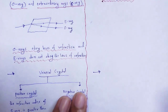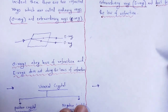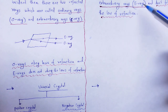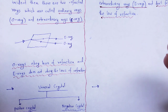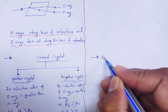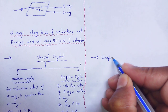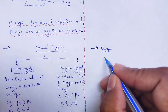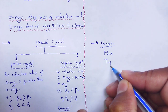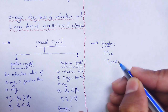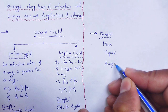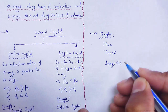For biaxial crystals, as we said, they have two optic axes and two refracted rays that are only extraordinary rays — these rays do not obey the law of refraction. The examples of biaxial crystals are mica, topaz, and aragonite.